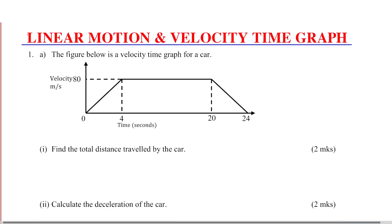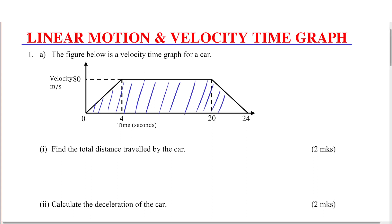Given the velocity time graph, we need to find the total distance traveled by the car. To find the total distance, we get the area enclosed by this velocity time graph. When you get the area enclosed by this graph, that gives the total distance. Looking at the shape enclosed from 0 to 24 at 20 seconds, you can see this is a trapezium, so the area of that trapezium gives the total distance traveled.